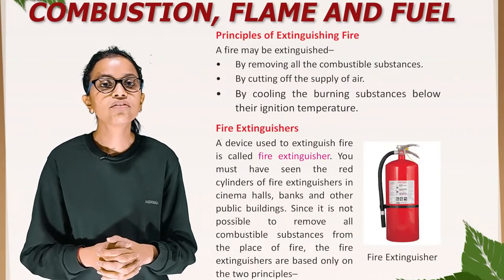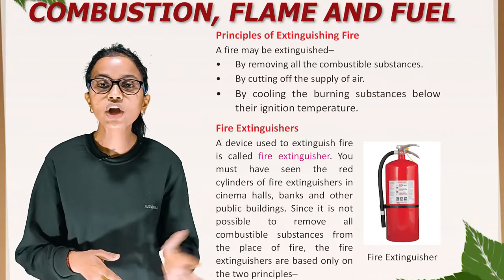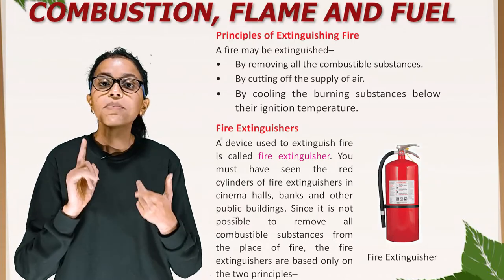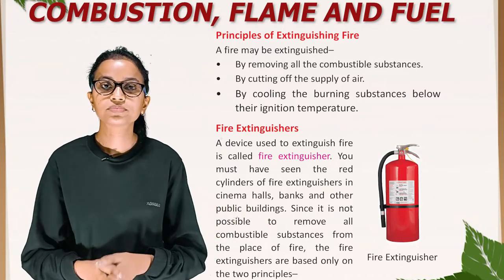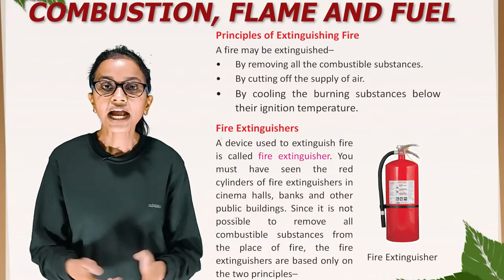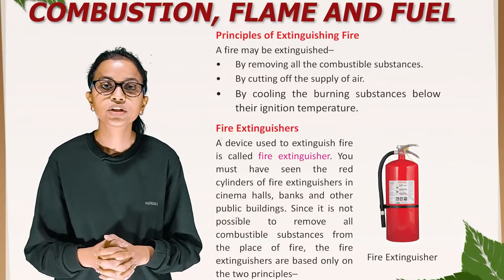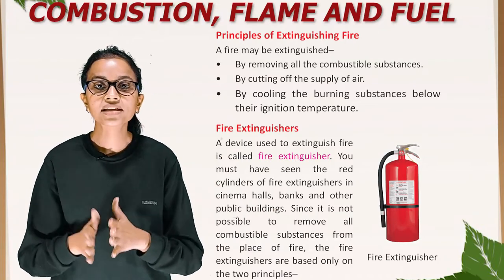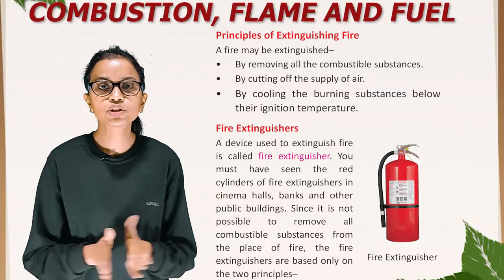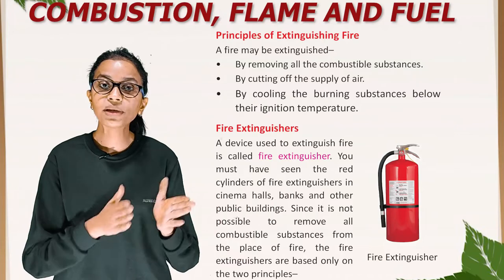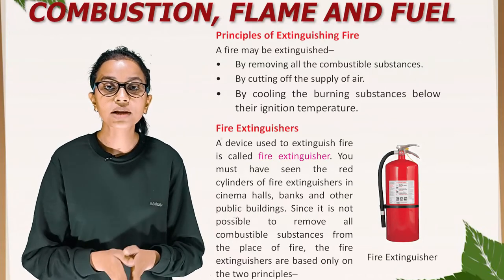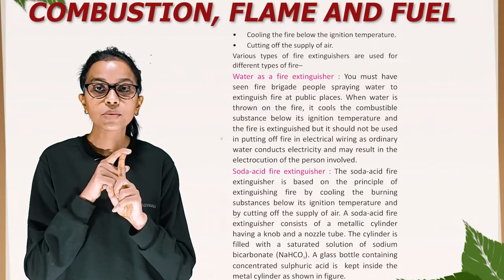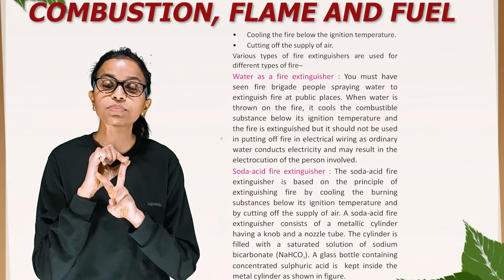Principles of Extinguishing Fire. A fire may be extinguished by removing all the combustible substances, by cutting off the supply of air, or by cooling the burning substances below their ignition temperature. Fire extinguishers. A device used to extinguish fire is called a fire extinguisher. Since it is not possible to remove all combustible substances from the place of fire, fire extinguishers are based on only two principles: cooling the fire below the ignition temperature, and cutting off the supply of air.